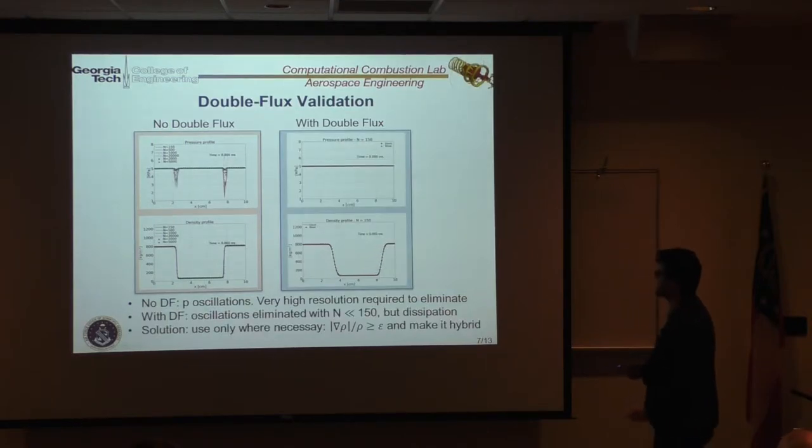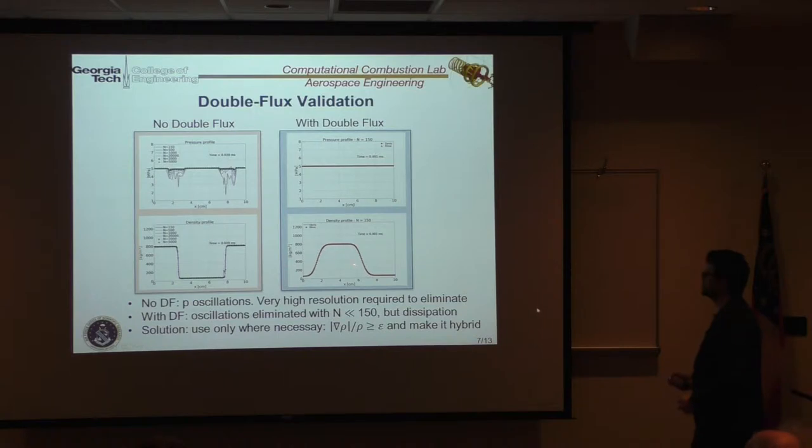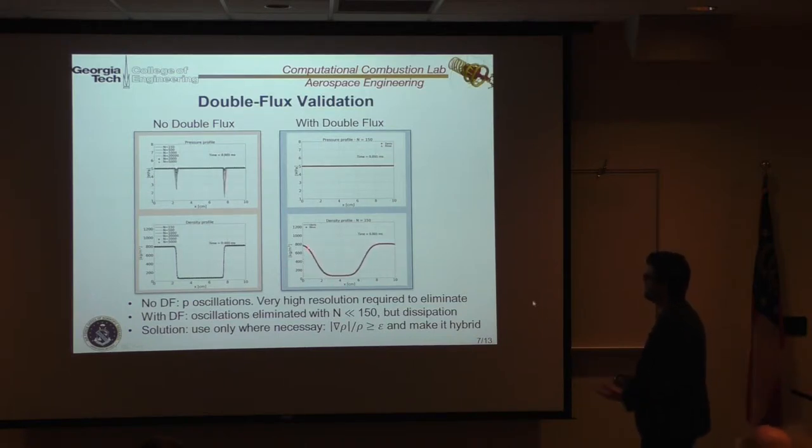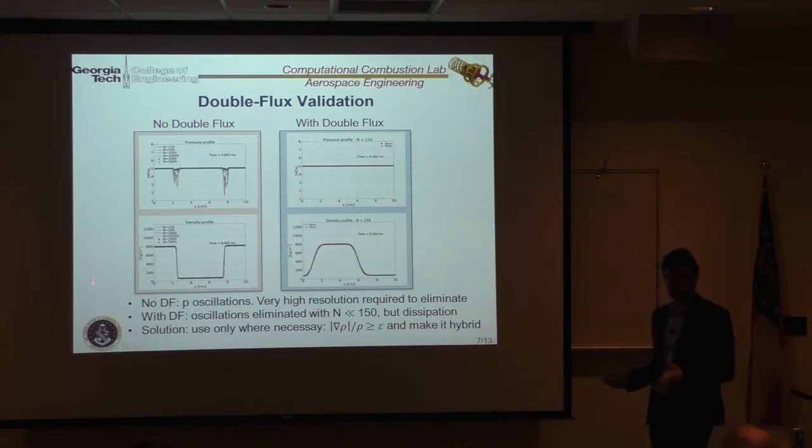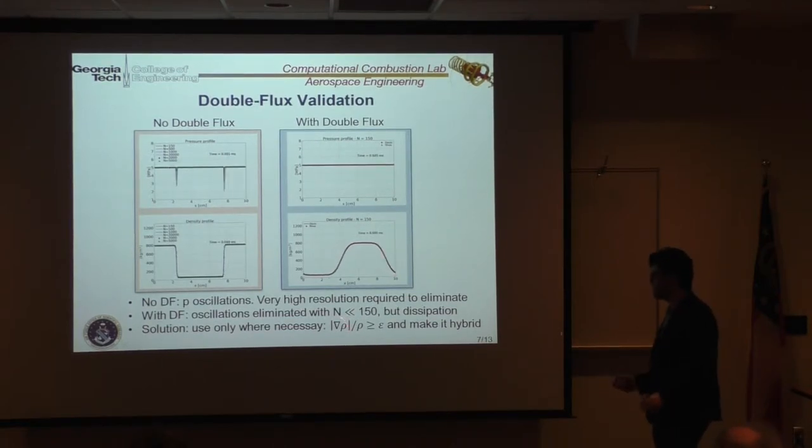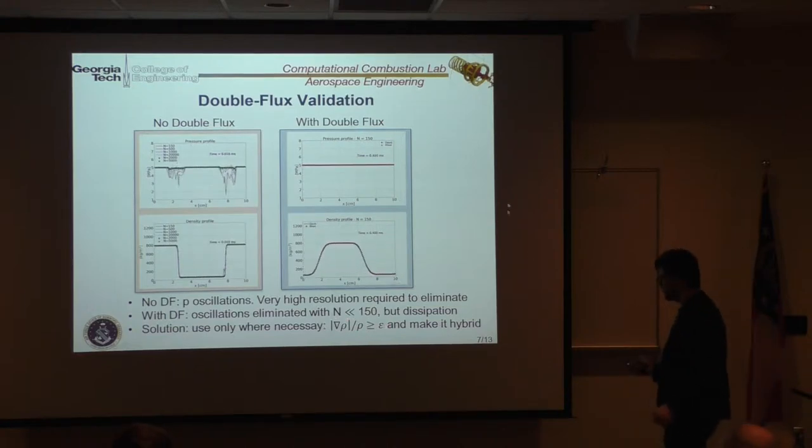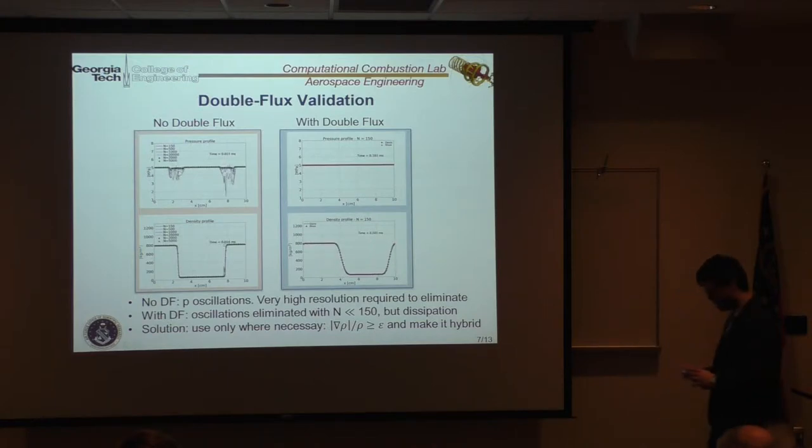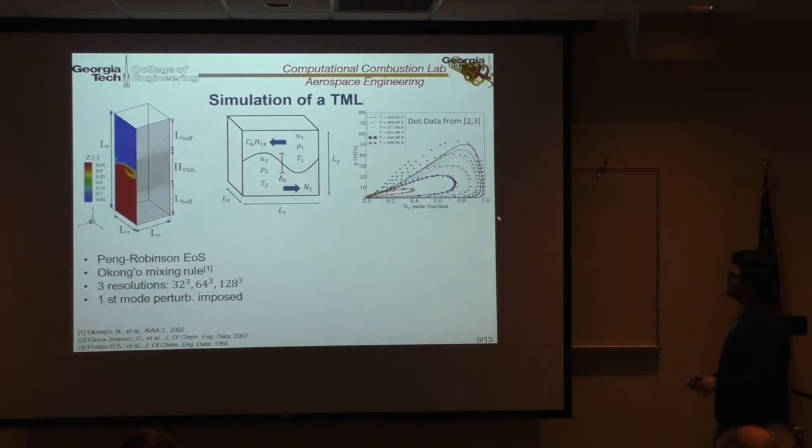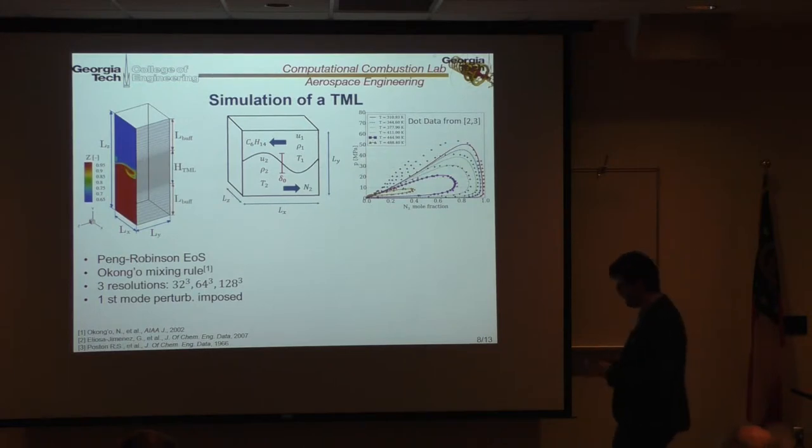Now, if you use the double flux, you fix this problem, but you are introducing more dissipation in your scheme, as expected. And so, the idea is that you use this approach only where indispensable in your domain, only in the regions where your density gradient is very large. And so, that's why I developed the hybrid scheme, which uses this with the other scheme. That fixes the numerical part.